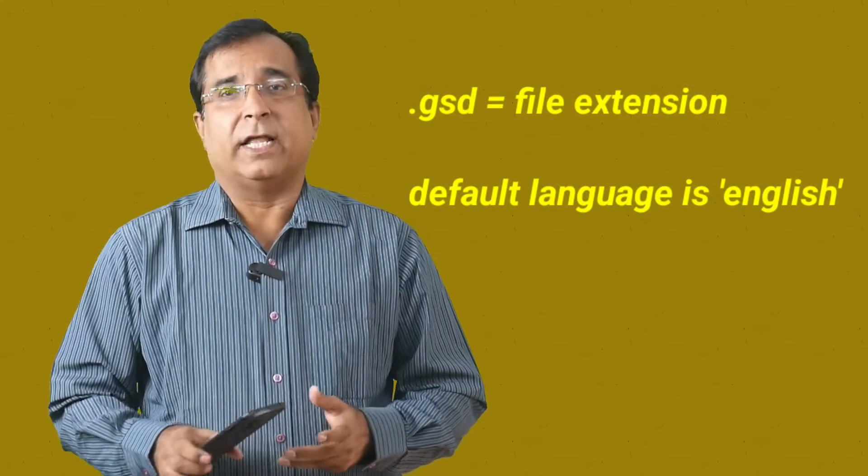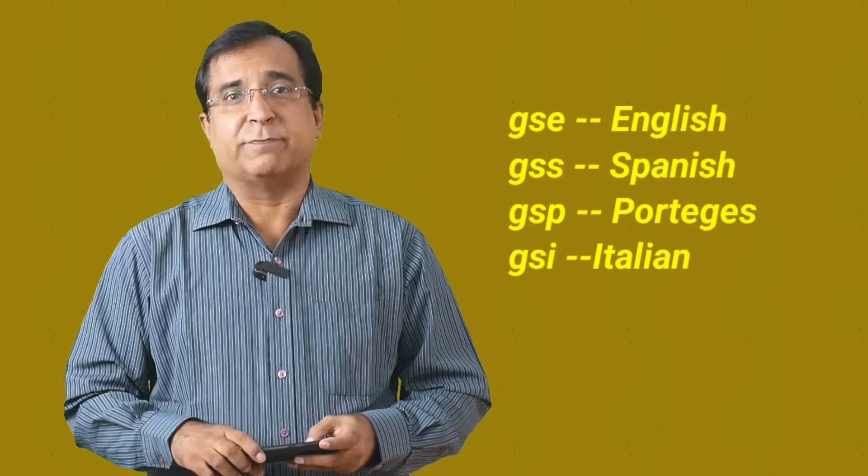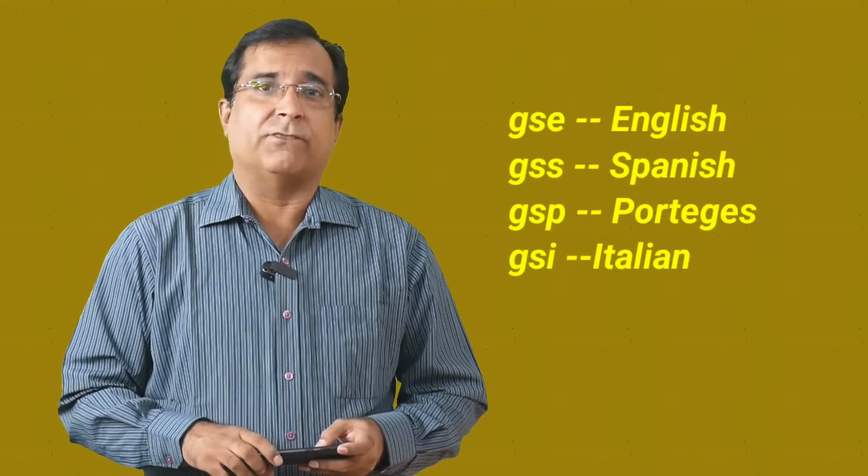.gsd is the extension. Default language is English. When you search on the internet for a specific GSD file, you may come across various extensions of file. .GSD files have language-specific instructions. These last letters are the language in which the file is written. Here GSD represents default format for English, GSE for English, GSS for Spanish, Portuguese, French, Italian.